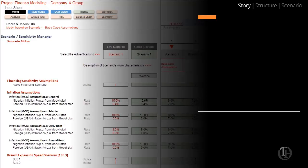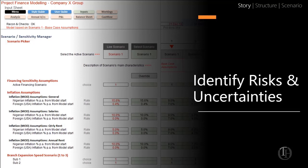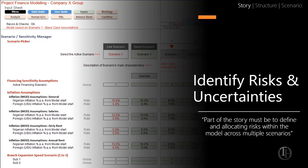In understanding the story, you need to think about risk and uncertainty. Every single thing about life in general involves risk and uncertainty — and who can manage the risk best. If you want to be very successful, it's about passing on the risk to somebody else that can bear it better. As a financial modeler, you're looking at this story and saying, what are all the risk items here? Let's identify the risks. These key, big uncertain risks are things we probably need to build scenarios out of. The first S is story — be able to tell that story, and part of that story must be to define and allocate risk within the model across multiple scenarios.